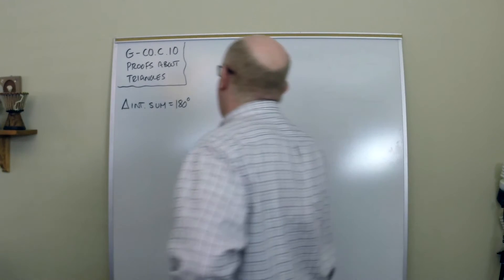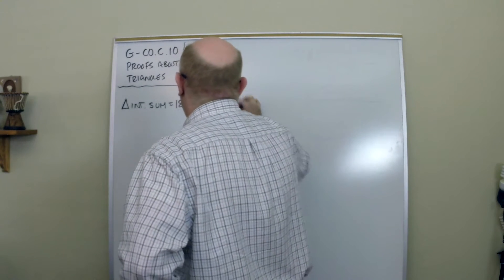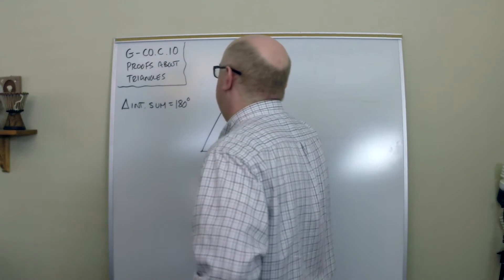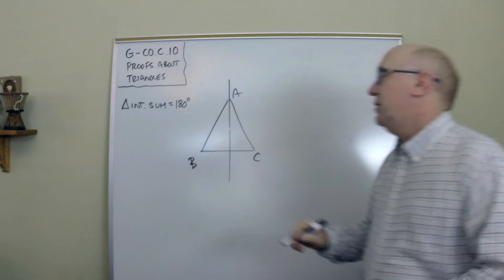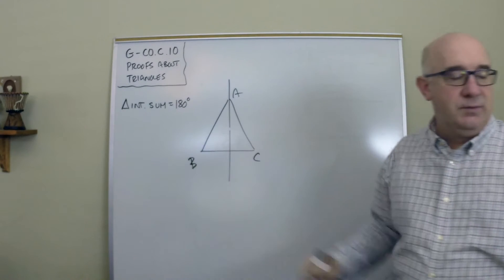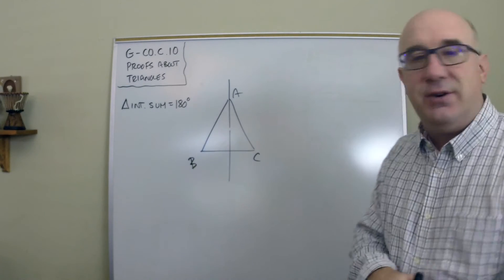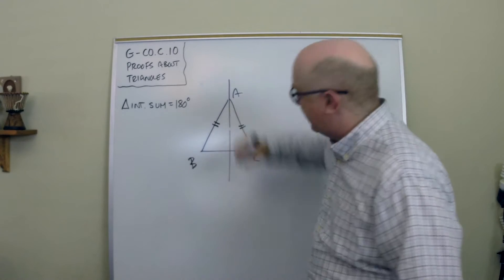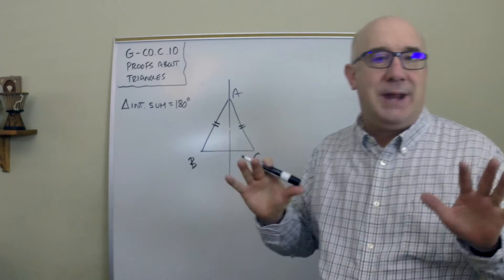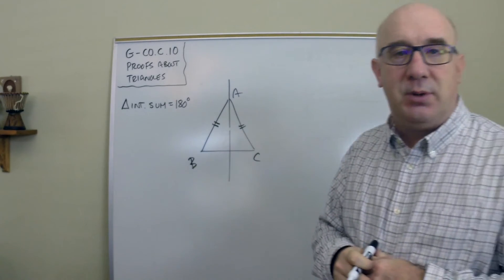But one of the properties is to prove that the base angles of an isosceles are equal. That we'd want to prove that angle B and angle C are equal if this is an isosceles. And there are kind of two camps here of how to approach this.